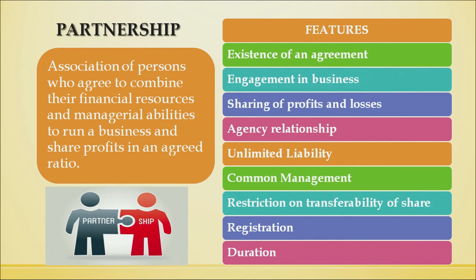The second feature is engagement in business — partnership can be formed only to run a for-profit business, whether production or distribution activity, but it must be legal. The third feature is sharing of profits and losses — all partners share profits or losses in the ratio of their capital contribution, and if there are losses, their personal assets can also be used to pay their part. Agency relationship: partners act as agents for each other, and every partner is responsible for actions taken on behalf of the other partners.